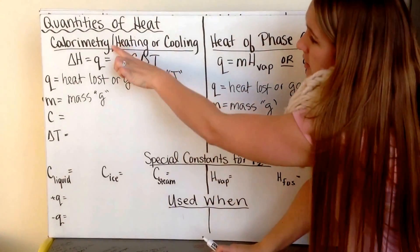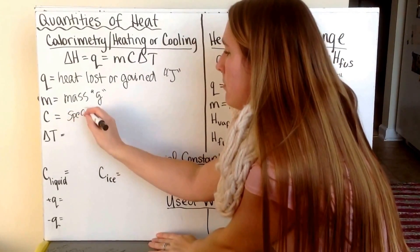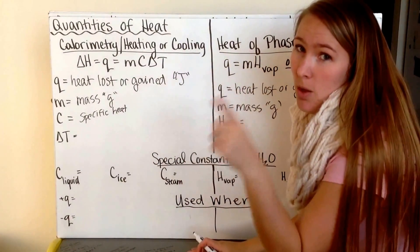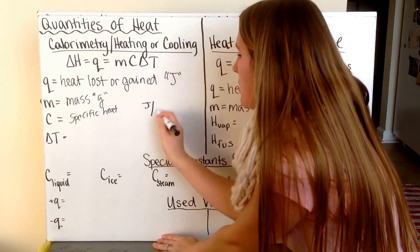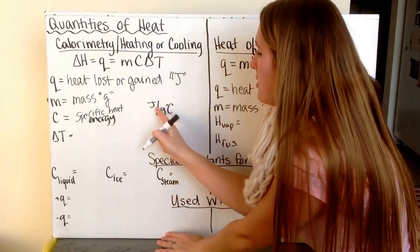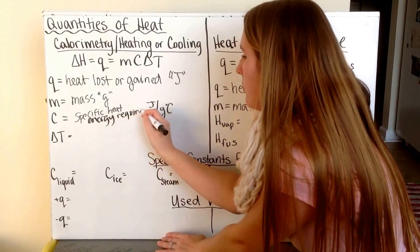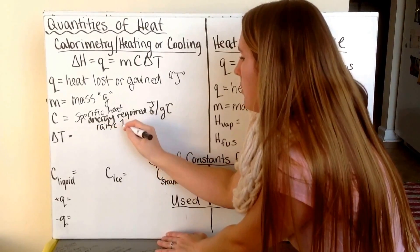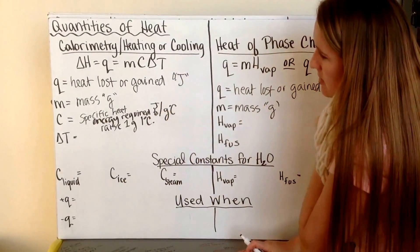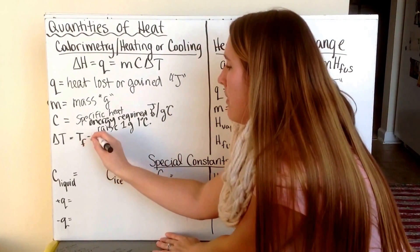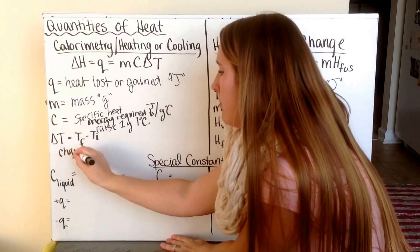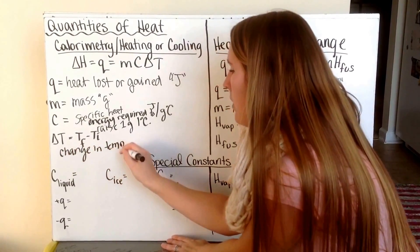Our calorimetry problems have C, which is specific heat — the amount of heat required to raise one gram one degree Celsius. It has units of joules per gram degree Celsius. Delta T is equal to T final minus T initial, our change in temperature, and that's measured in degrees Celsius.